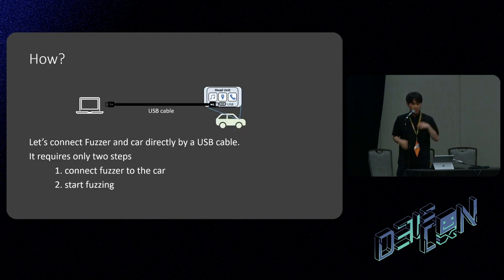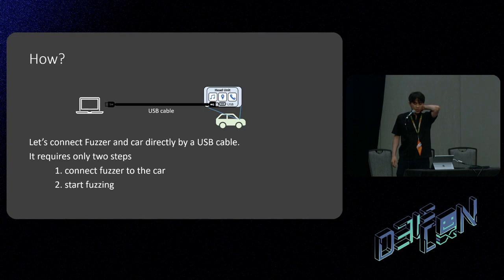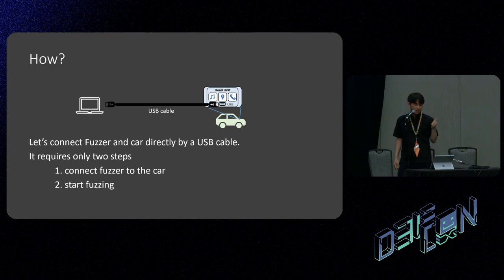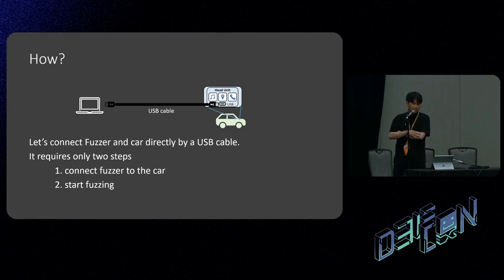How do we solve the challenges? First, let's connect the fuzzer to the car directly by a USB cable. If fuzzing is possible in this way, the process becomes very simple — only two steps: connect the fuzzer and car, and just start fuzzing. The fuzzer can automatically transmit malformed files to the car and monitor the car to detect failures. Testers don't have to move files or monitor the car during fuzzing.